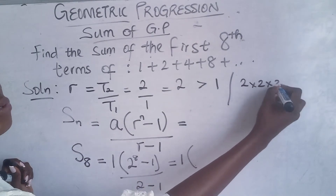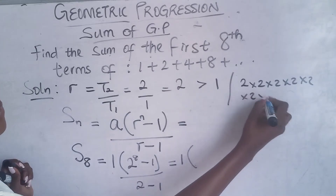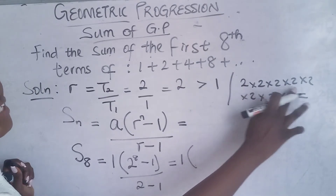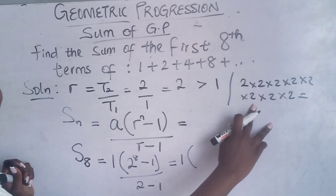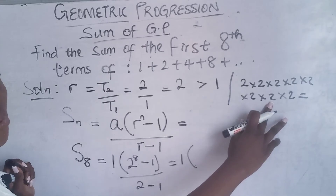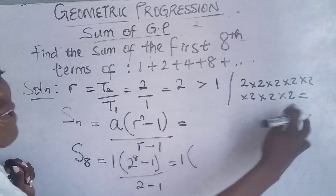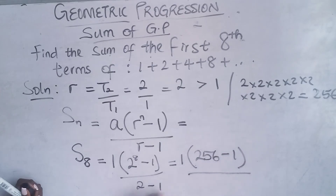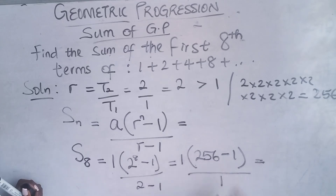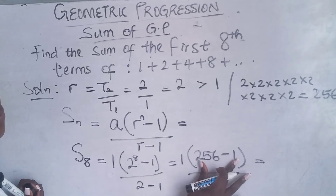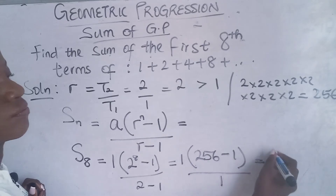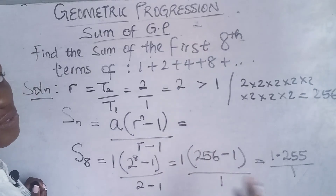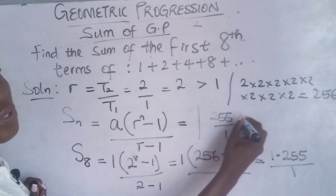Calculating 2^8: 2×2=4, 4×2=8, 8×2=16, 16×2=32, 32×2=64, 64×2=128, 128×2=256. So 2^8 = 256. Therefore S8 = 1 × (256 − 1) / (2 − 1) = 255 / 1 = 255.